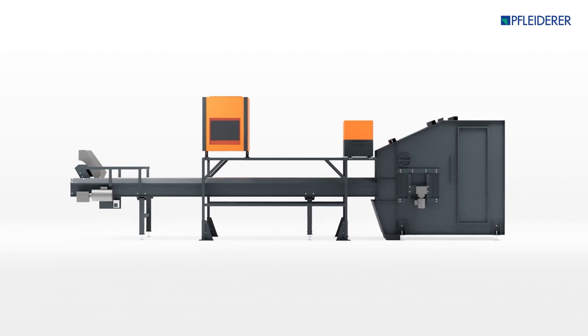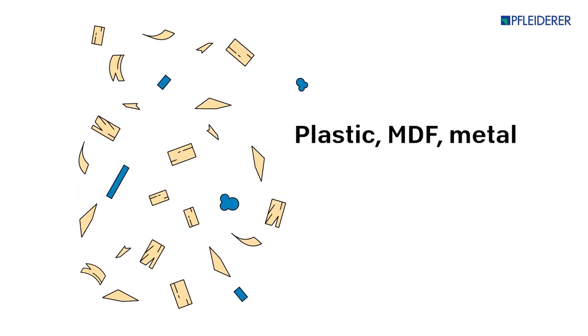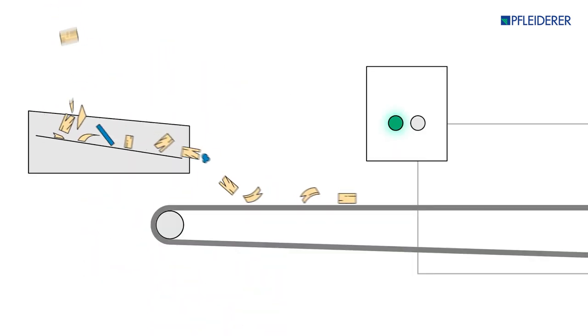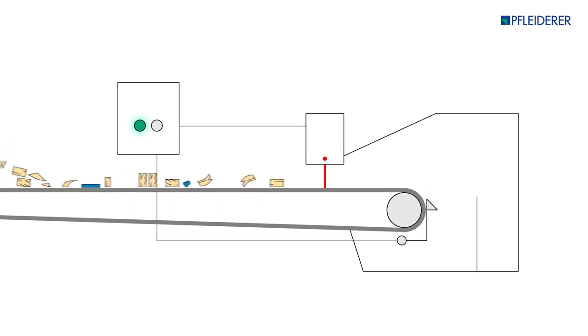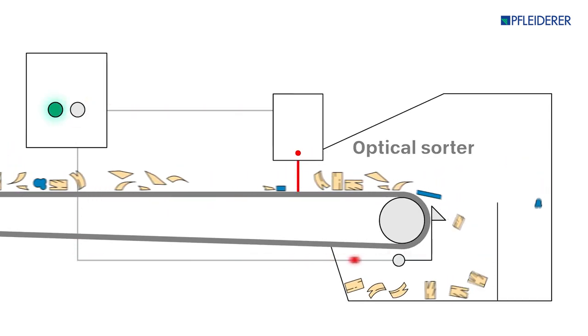In the final step, plastic, MDF, along with any remaining metal particles, are extracted. This is achieved with the aid of an optical sorter utilizing a smart recognition algorithm that continuously analyzes the entire material flow.